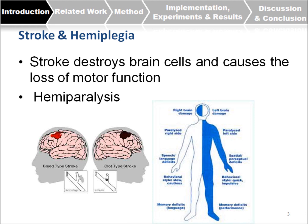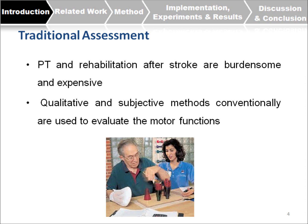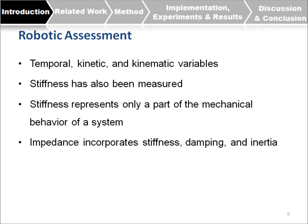Stroke destroys brain cells and causes loss of motor function. If it happens in the left hemisphere, the right side of the body will be paralyzed. In the right hemisphere, the left side of the body will be paralyzed. After stroke, patients need to undergo physical therapy and rehabilitation, for which assessment is required. Traditional assessment methods are qualitative and subjective, so people have been interested in using robotic technology to focus on temporal, kinetic, and kinematic variables in an objective and quantitative manner.